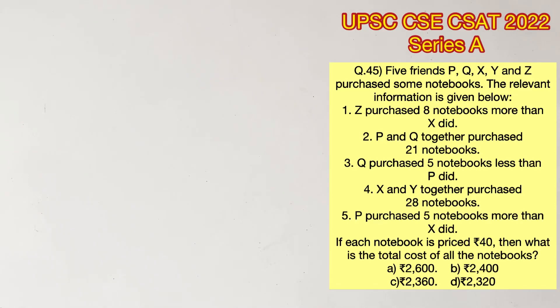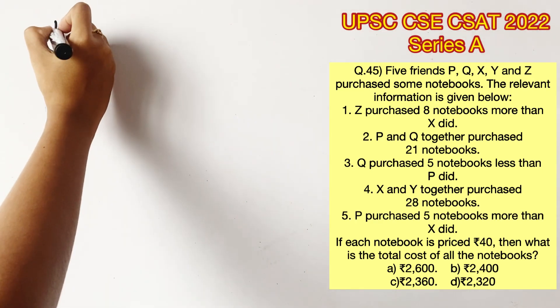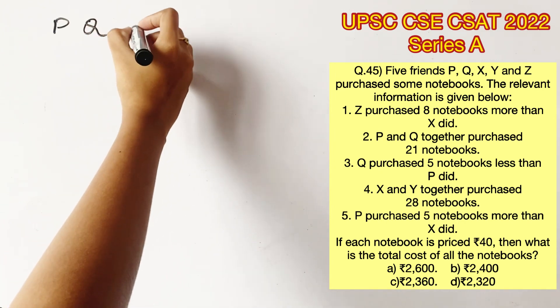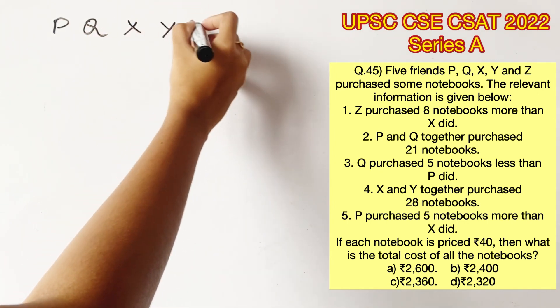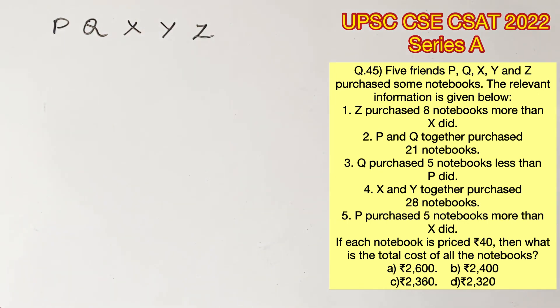Please pause the video and read the question completely. In the question they have said that there are 5 friends P, Q, X, Y and Z. They have purchased some notebooks.